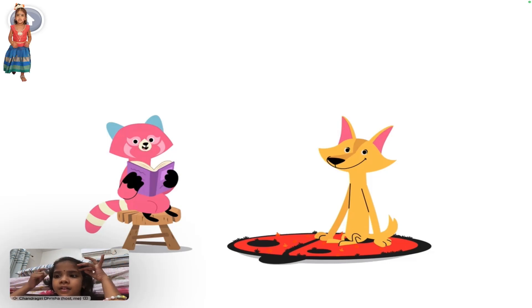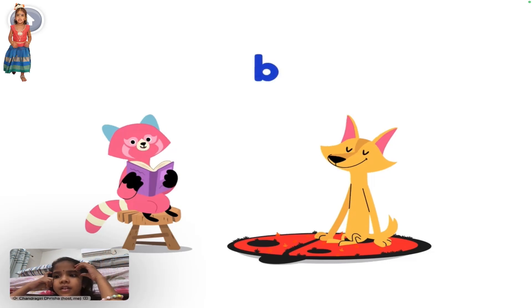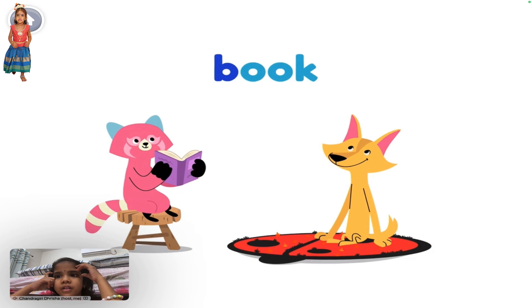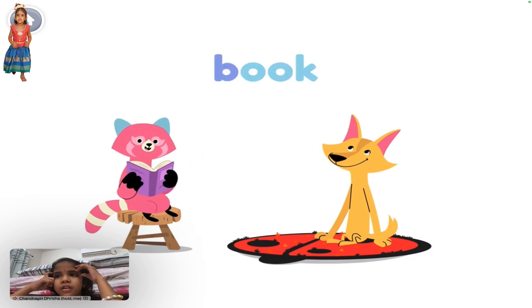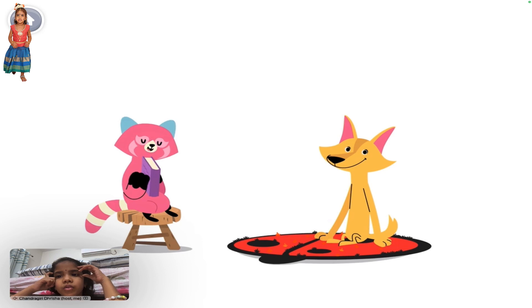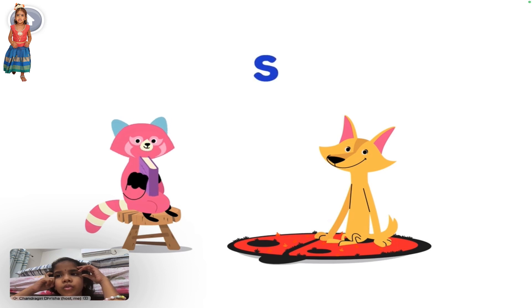A common noun starts with a lowercase letter, like the word book. A proper noun is different. It's a specific person, place, or thing, and starts with a capital letter.